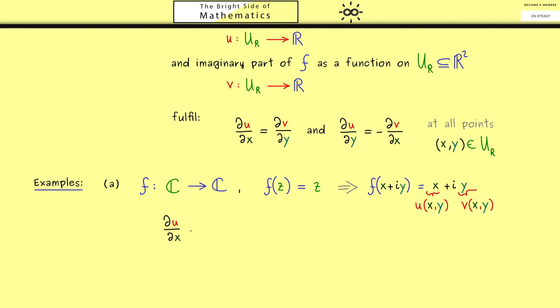First we have ∂u/∂x, which is in this case simply 1. In the same way, we also see that ∂v/∂y is very easy to calculate. Because this is a simple function and the derivative is just 1 again. Hence we immediately see that the first equation is satisfied at all points.